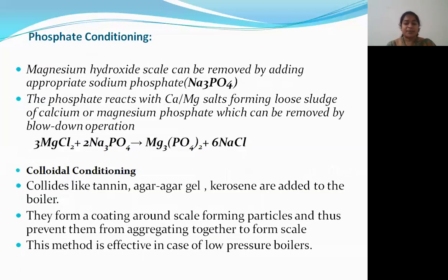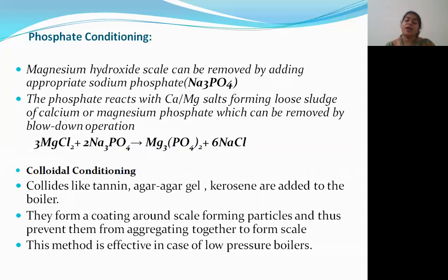Next is phosphate conditioning. In phosphate conditioning, magnesium hydroxide scale can be removed by adding appropriate sodium phosphate. This phosphate reacts with calcium and magnesium salts, forming a loose sludge of calcium phosphate or magnesium phosphate, which can be removed by the blowdown process. This process is called phosphate conditioning.